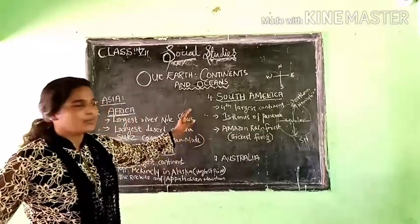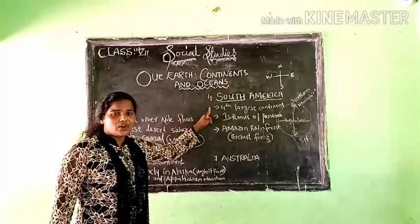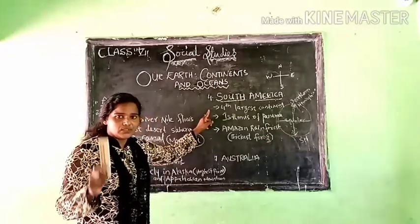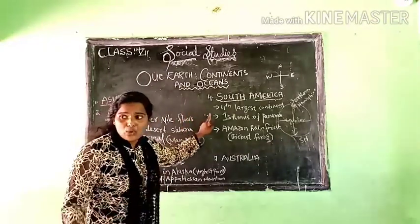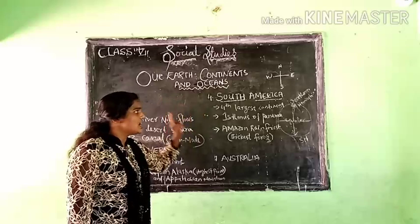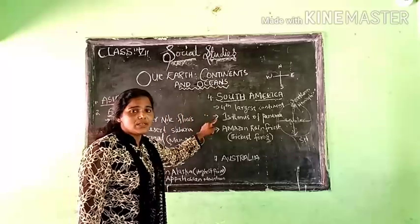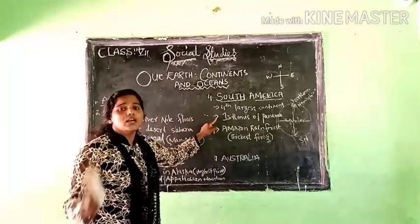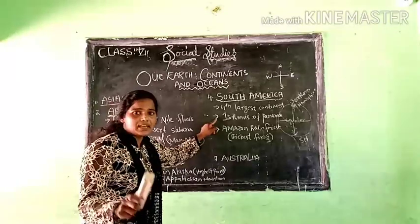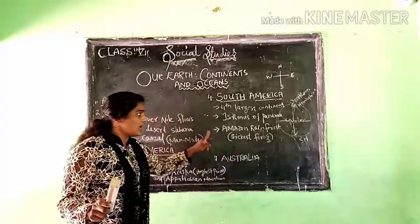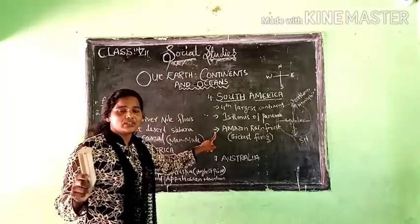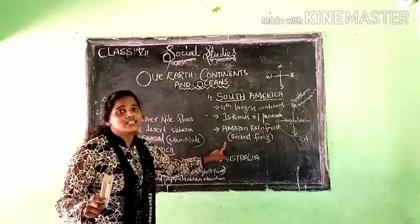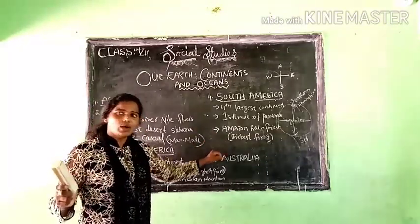To summarize South America: it is in the Southern Hemisphere of the equator and is the fourth largest continent. The Isthmus of Panama, a narrow land, connects North America and South America. And the Amazon Rainforest, the thickest forest in the world, is in South America.